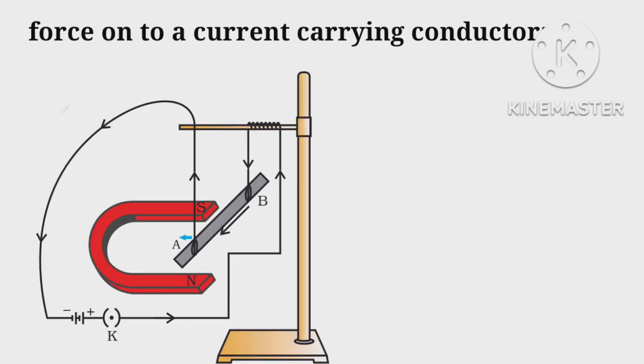Similarly, if current is allowed to flow through a conductor, the magnetic field also exerts a force on the current-carrying conductor. As a result, there is a displacement. If we reverse the direction of current, the direction of force is also reversed.